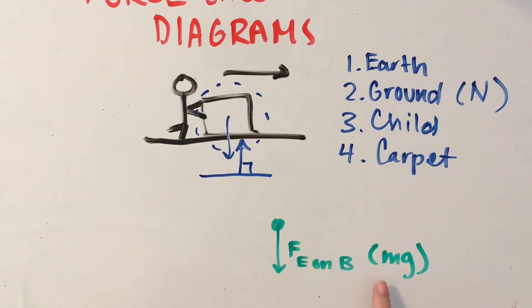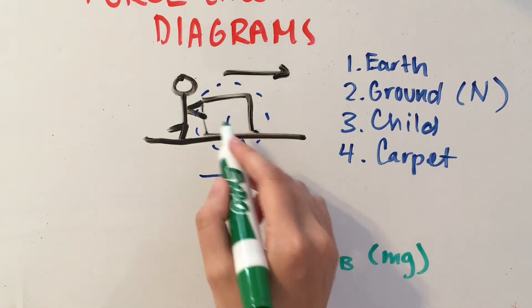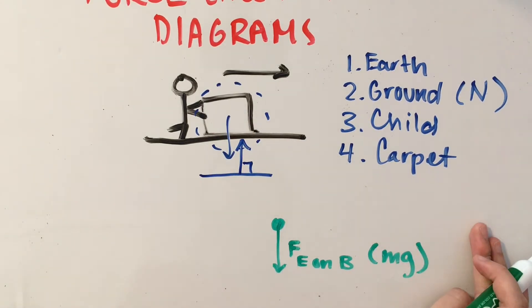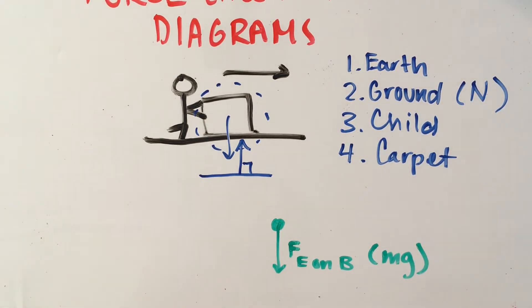What this is basically saying is that the magnitude of the force exerted on the box by the Earth is equal to mass times gravity. So whatever the mass of the box is times 9.8, which is basically the acceleration caused due to gravity.